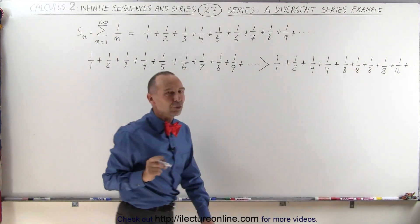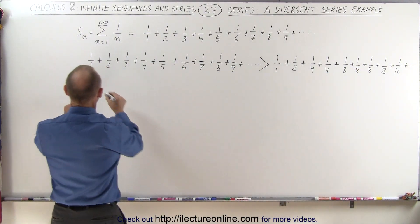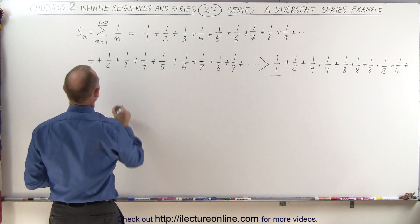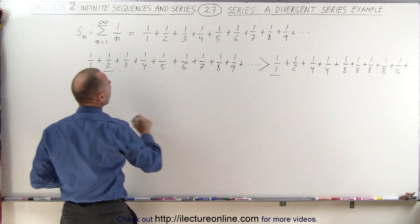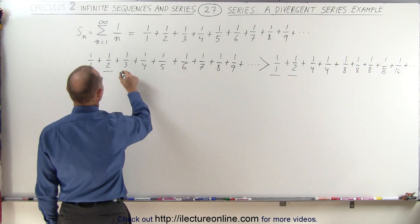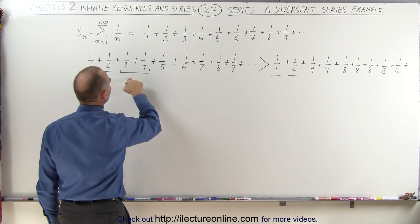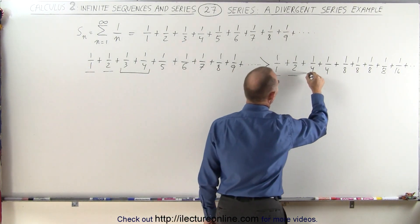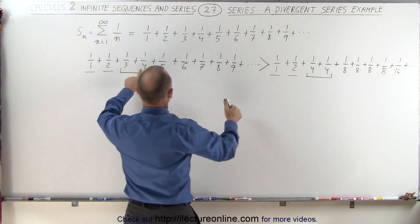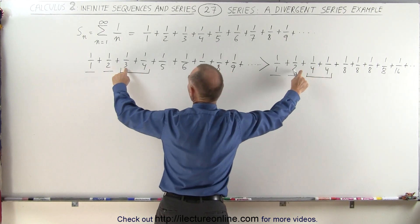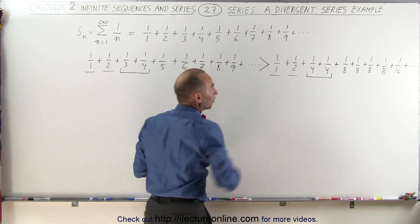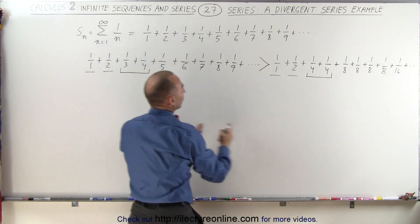So what did I do? The first term, 1 over 1, is still the same 1 over 1 — that's equal to 1. The second term, 1 over 2, is the same as 1 over 2. But for the next two terms, I take 1 over 3 plus 1 over 4 and replace it by 1 over 4 plus 1 over 4. The last fraction is the same, but the first fraction, 1 third, is larger than 1 fourth, and hence that's why I use the greater-than symbol — this is larger than that.